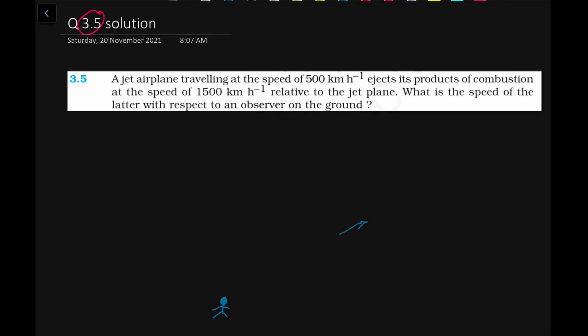Suppose here we have an observer, let me show you. Here we have the observer, and the aeroplane is over here moving in this direction — that is, away from the observer — and its speed is given to be 500 km per hour. So the combustion gases or combustion products will be ejected in the opposite direction, towards the observer. The observer will see the gases coming towards him.